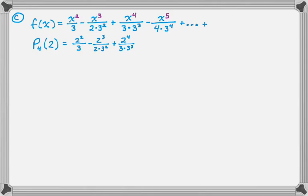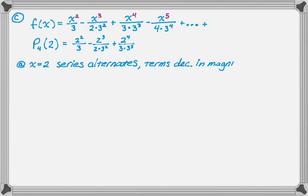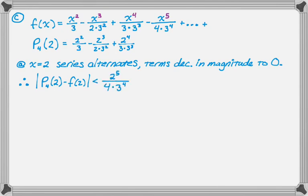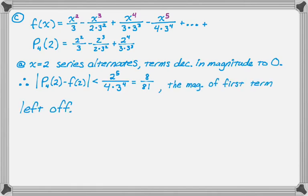I'm going to justify using the alternating series error bound. At x equals two, the series alternates, the terms decrease in magnitude, and they decrease toward zero — so this is a convergent alternating series and I can apply the alternating series error bound. The error, the absolute value of P4(2) minus f(2), is less than two to the fifth over four times three to the fourth, which is the magnitude of the first term that was left off.